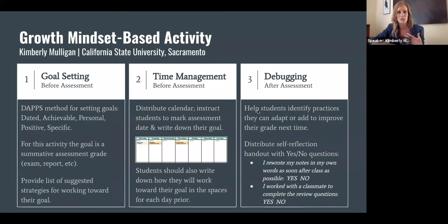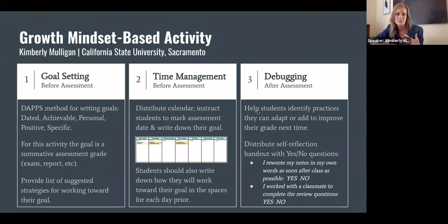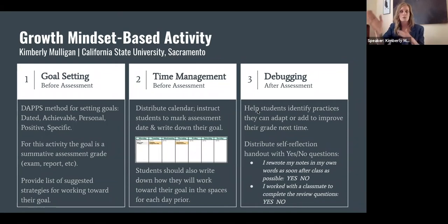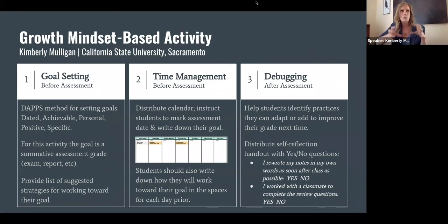For instance, if you're taking 18 units with a lot of tough upper division classes, maybe it's time to pare that back if you want to set higher goals. For the time management piece, I distribute a calendar covering three weeks. I have students write down their grade goal on exam day, and then for each of the three weeks prior, they write down how they're going to work toward that goal each day.